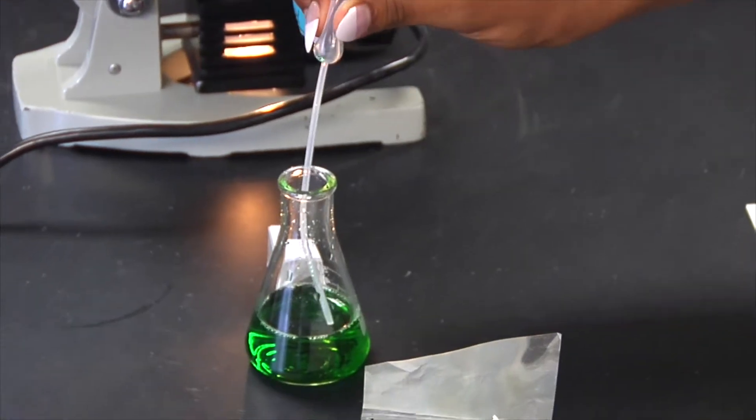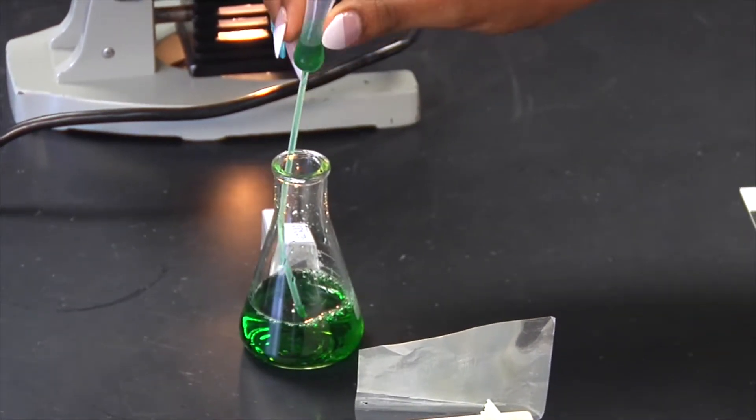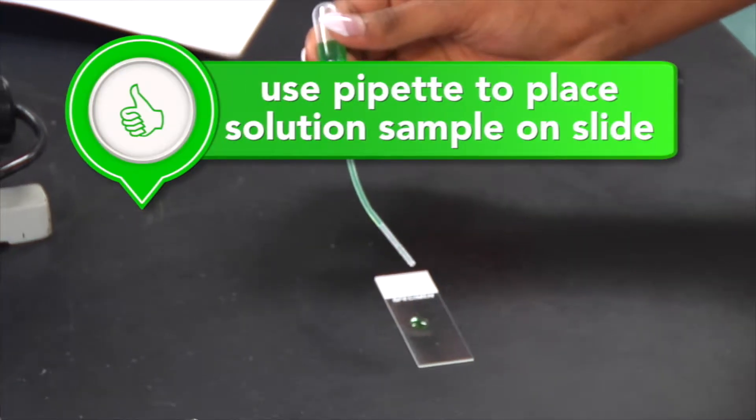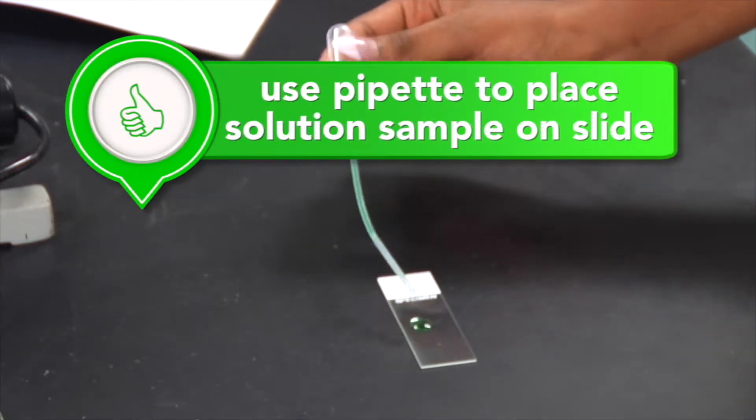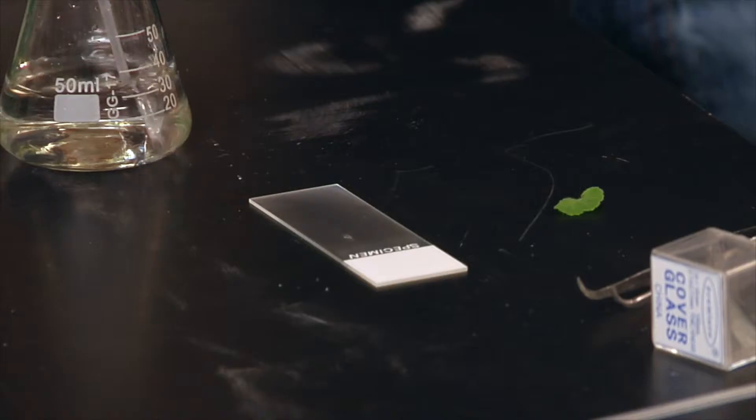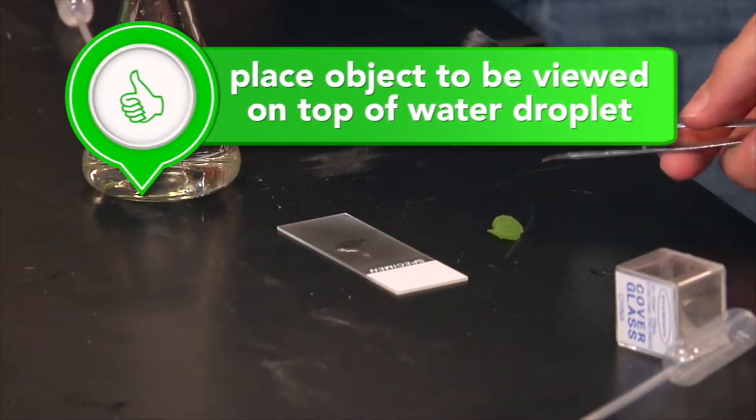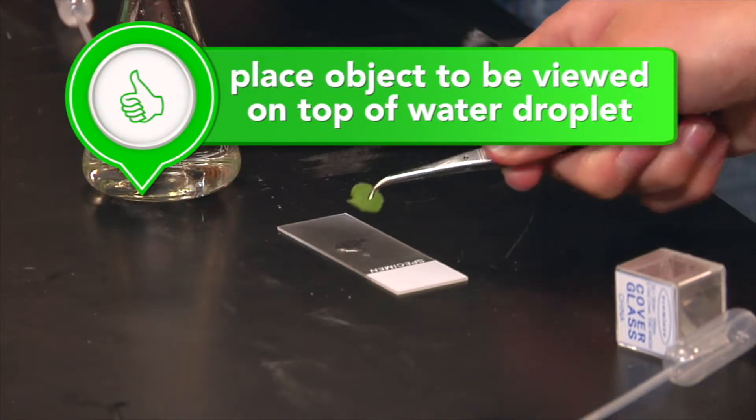Next, you have to prepare the specimen properly. If the specimen is already in water or other solution, use a pipette to place a drop of that solution onto the center of the microscope slide. If the specimen is not in solution, place a drop of water onto the microscope slide. Then place the object to be viewed on top of the droplet.